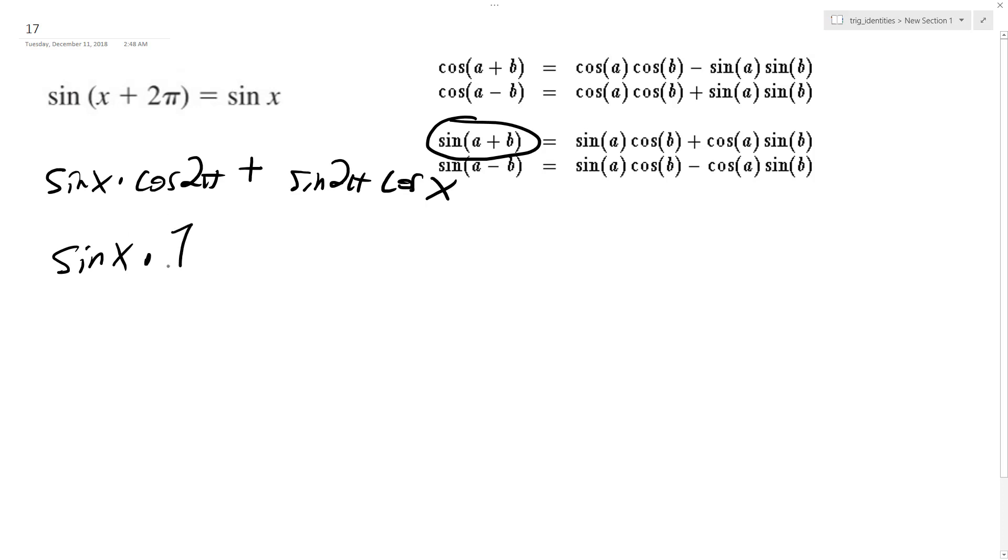Sine of x could be anything, times 1, and sine of 2π is y over r, and y is 0 at that point. Sine of 0 is 0, and sine of 2π is coterminal to it, so it's just 0 times cosine of x.